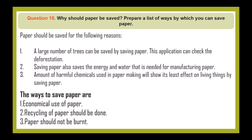Question 10: Why should paper be saved? A large number of trees can be saved by saving paper, which helps check deforestation. Saving paper also saves the energy and water needed for manufacturing paper, and reduces the harmful chemicals used in paper-making that affect living things. Ways to save paper: economical use of paper, recycling of paper, and paper should not be burned.